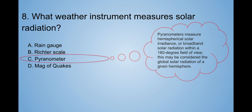Pyranometers measure hemispherical solar irradiation or broadband solar radiation within a 180 degree field of view. This may be considered the global solar radiation of a given hemisphere.